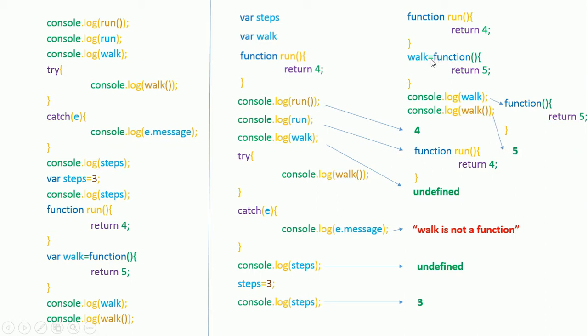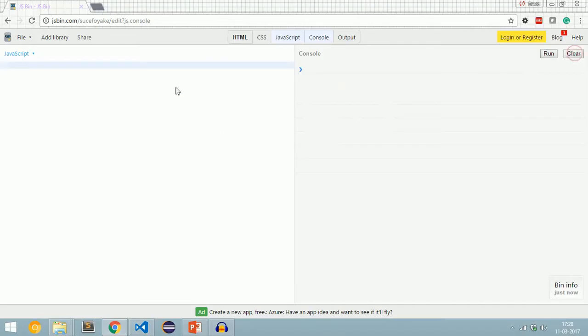So the definition again: hoisting is variables coupled declaration and initialization at the top of the scope. Wherever we initialize a variable in JavaScript code, it is taken to the first line and automatically assigned undefined by the JavaScript compiler. This is hoisting. Now let's see what temporal dead zone is.